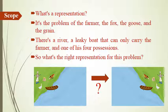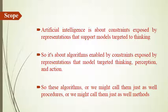Artificial intelligence is about constraints which are exposed by representations that support models targeted at thinking, perception, and actions. It is all about the algorithms enabled by those constraints and representations.